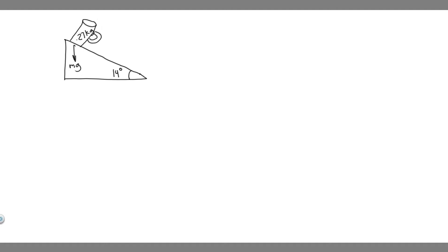We're going to have a normal force going straight upwards — F sub n — perpendicular to the incline. We're also going to have a force of friction going the opposite of the way it would slide down, so it's going to be going up the incline. And then we want to label the weight force in x and y components.